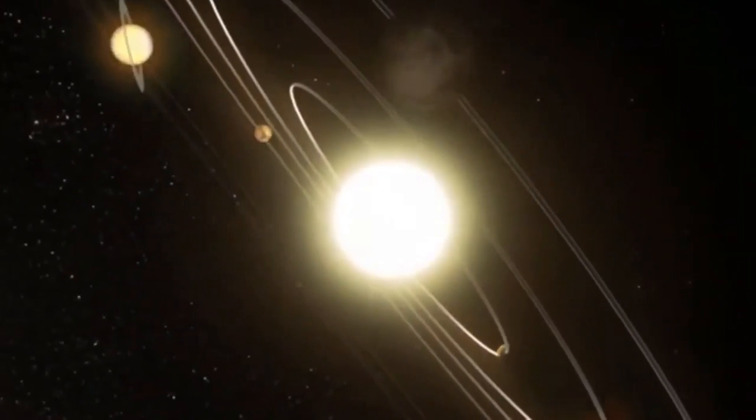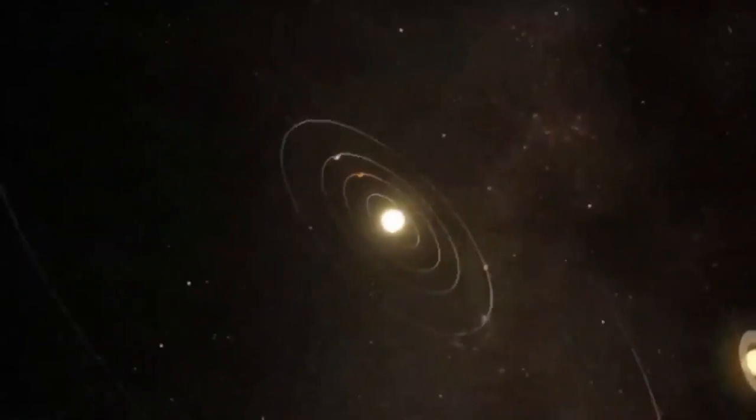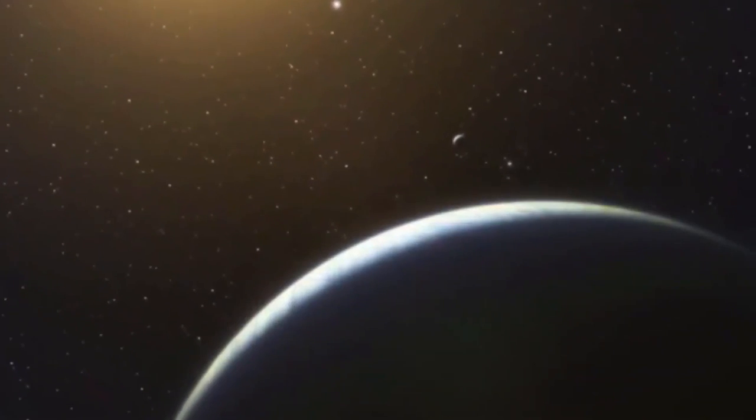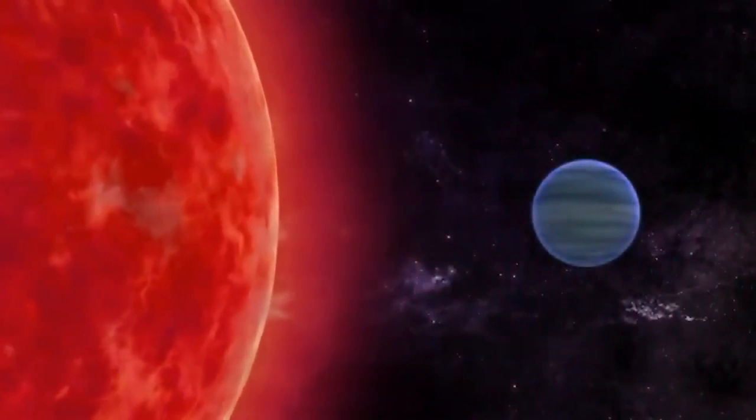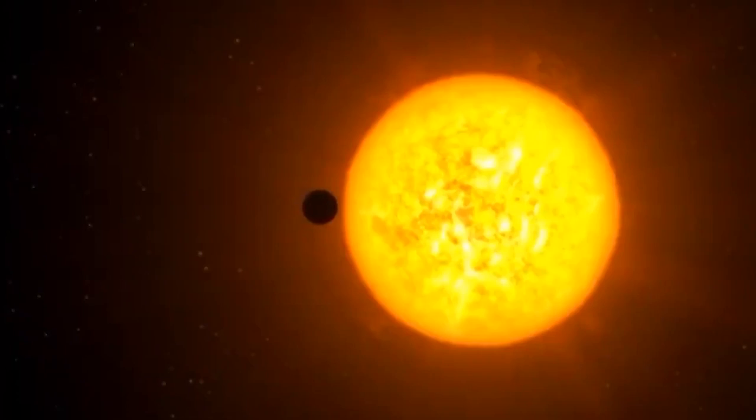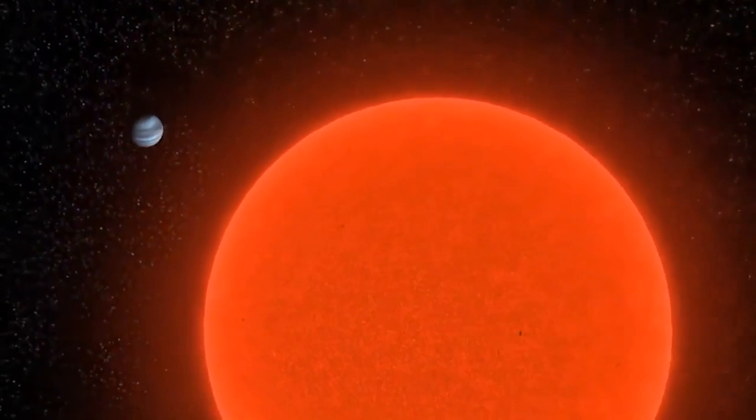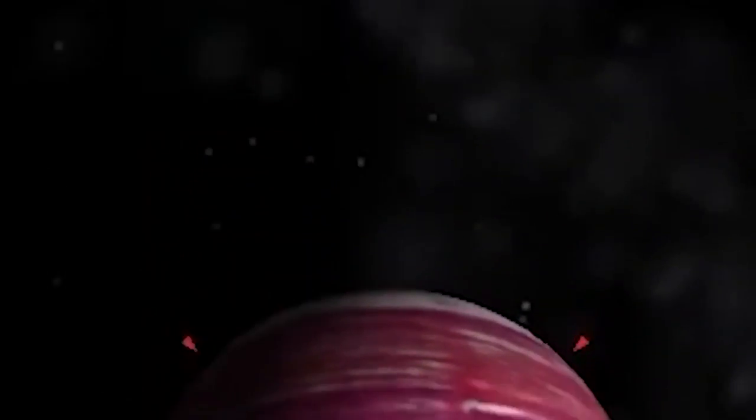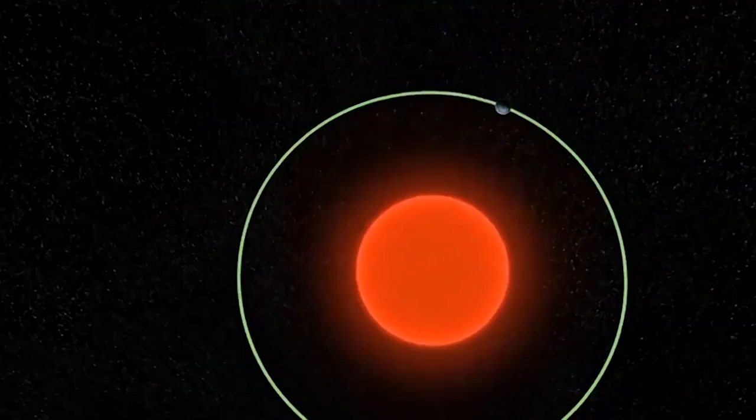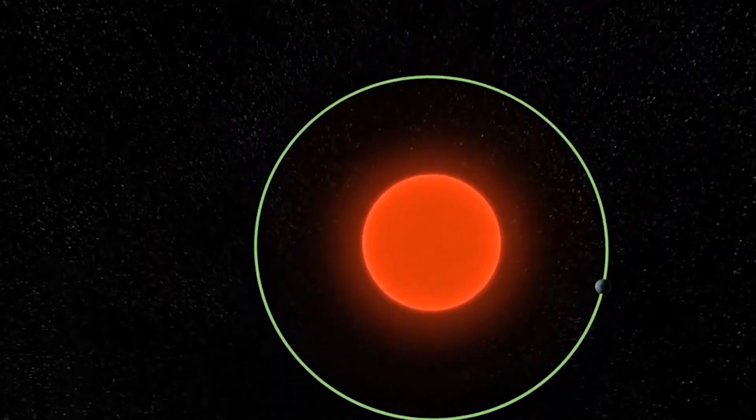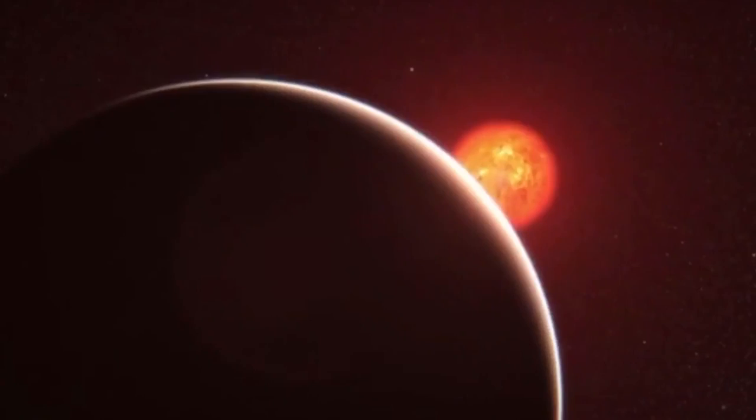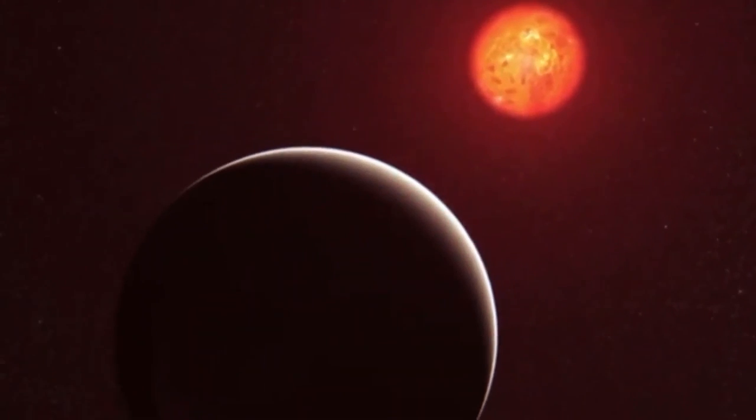Gliese 436b is a Neptune-sized planet that orbits a red dwarf known as Gliese 436, a star that is cooler, smaller, and less luminous than the sun. The planet completes one full orbit around its parent star in just a little over two days. And the sun is a key part of the equation, because according to models about the planet and the sun, there's a lot less methane between the two than there should be. Now apparently the planet has 7000 times less methane, and yet it has a lot of carbon monoxide.